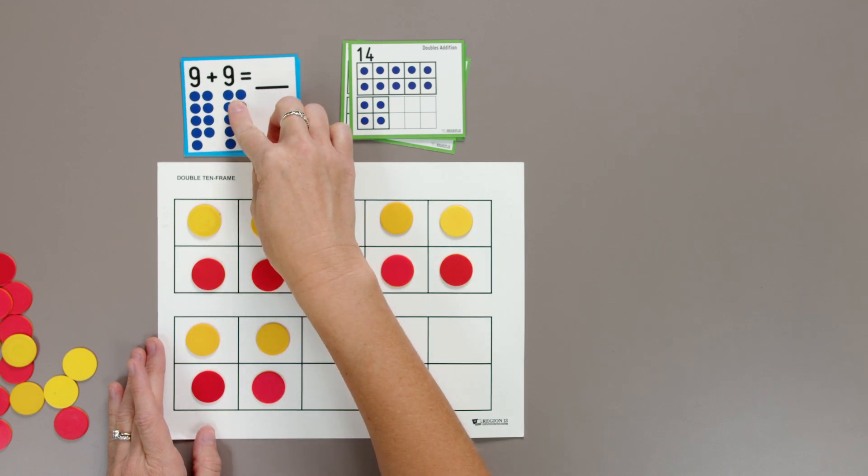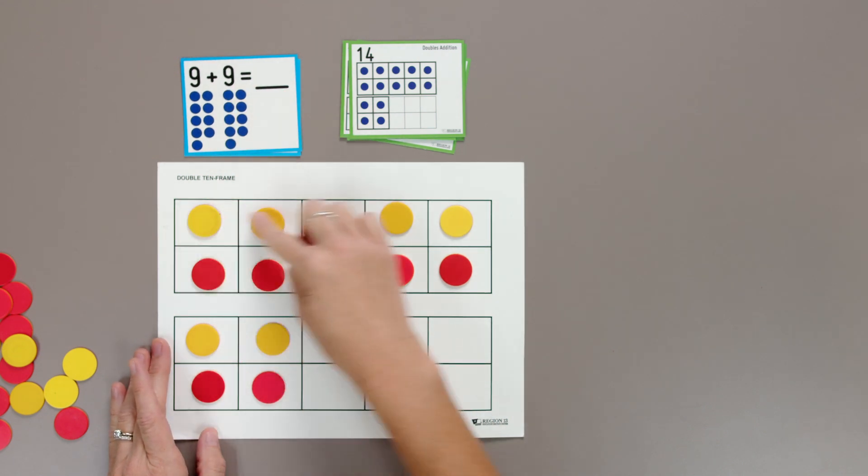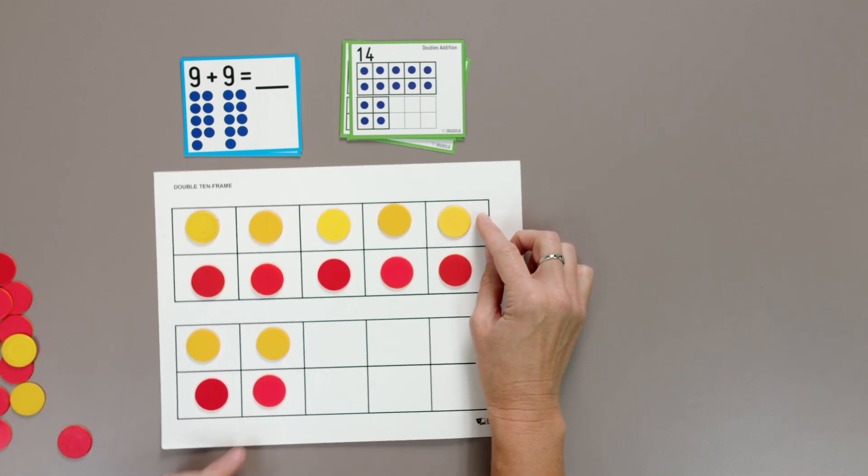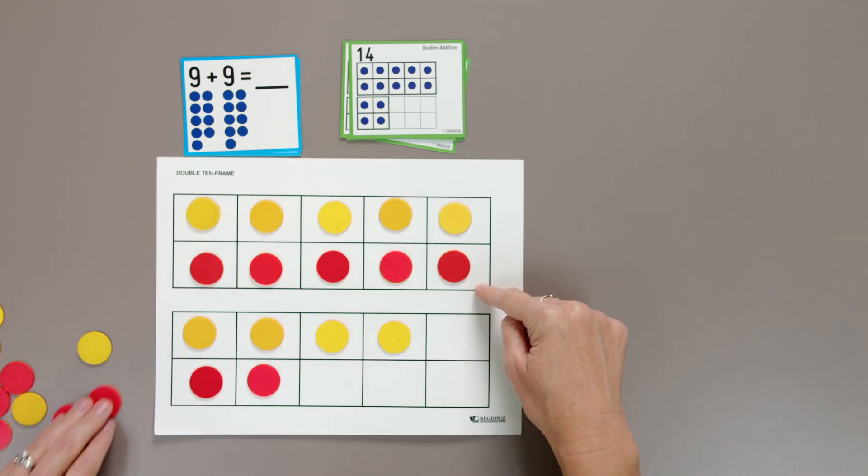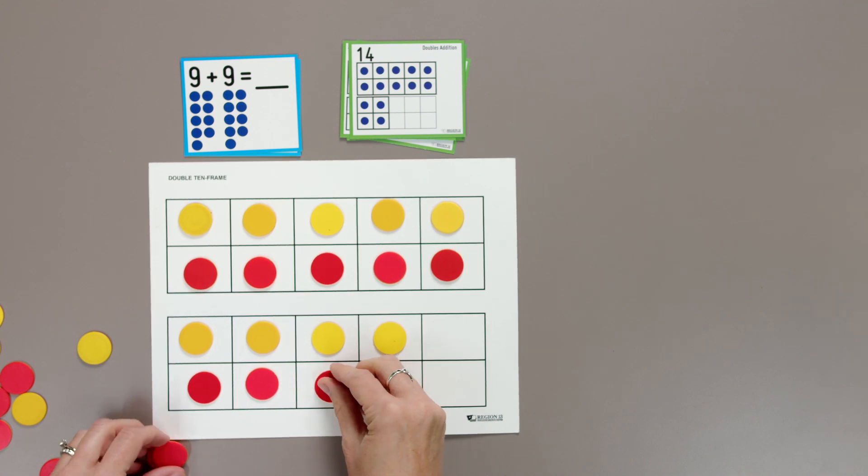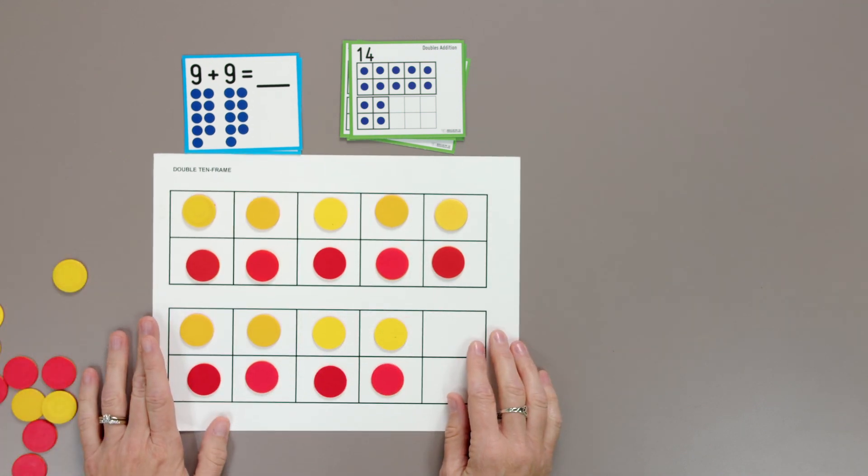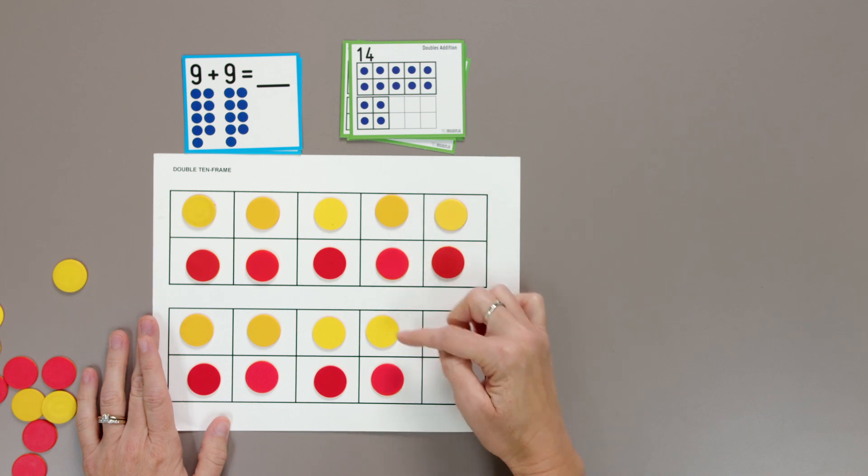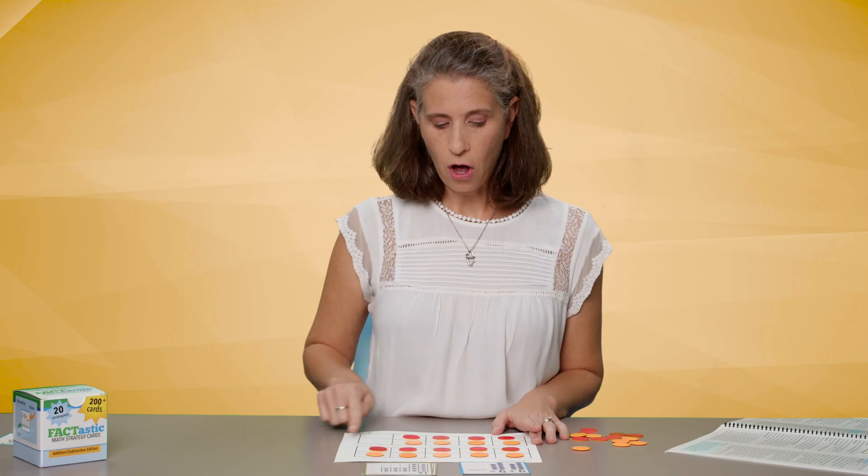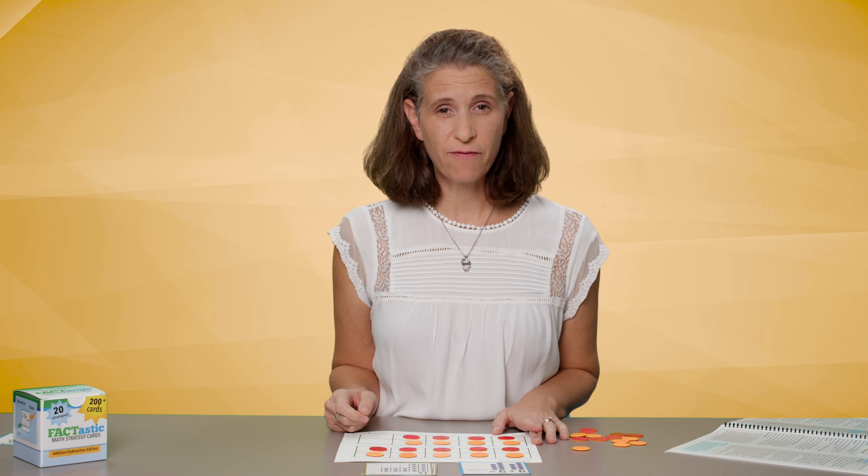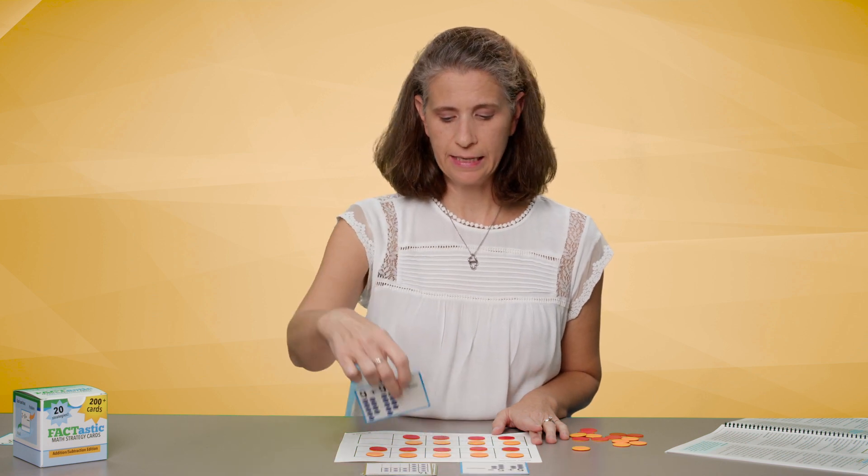Nine plus nine. Let's see. I have five yellow, and then six, seven, eight, nine yellow, and five red, and six, seven, eight, and nine red. So, nine yellow, nine red. Nine plus nine is almost the whole thing full. It's 18. Almost filled up the complete double 10 frame. 18. Nine plus nine is 18. We're getting at some big numbers today.